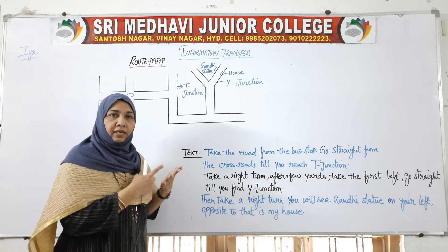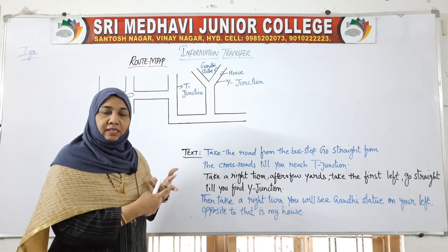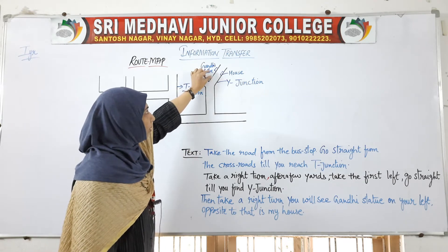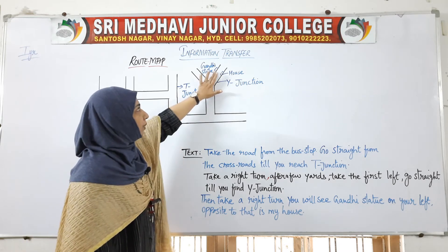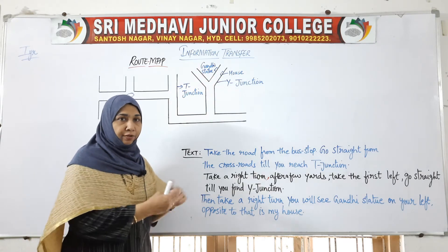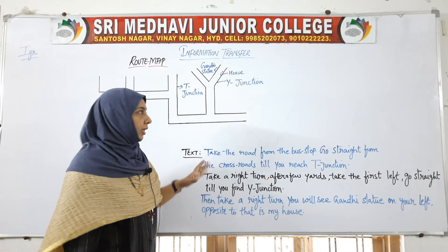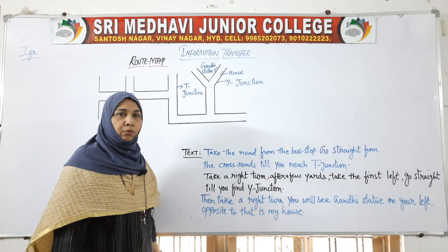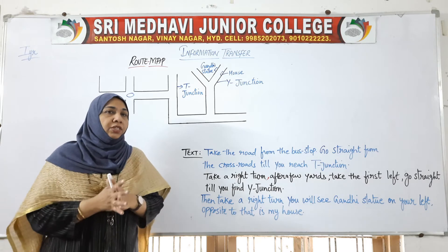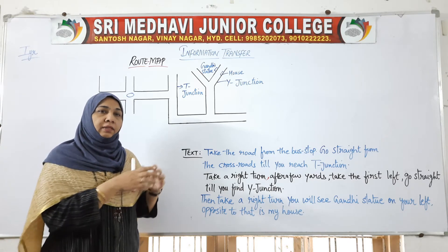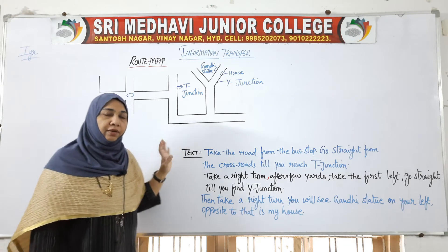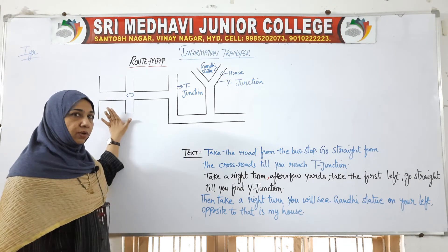I have written 'Gandhi statue' at the Y-junction. You have to mark the place mentioned in the question — sometimes they give a hospital, hostel, or company name. Draw a small box or rectangle and write the name of the building mentioned. Opposite to that landmark is the house of the narrator whose location you are explaining.